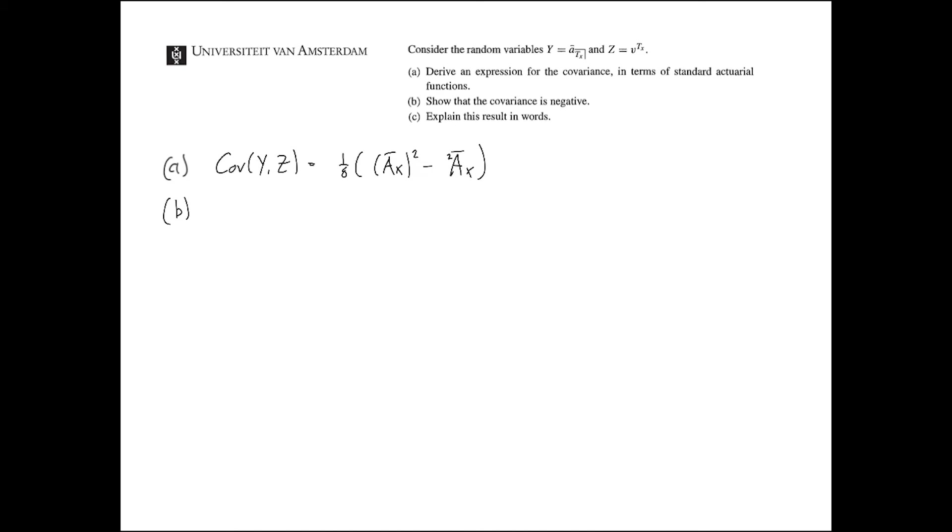And one thing that we know from probability is that the variance of a random variable relates these two things. So we know that the variance of some random variable, so let's say Z, because this is, you will see why. So this is the variance of Vt x, right, the definition of Z, which equals the second moment.